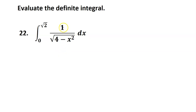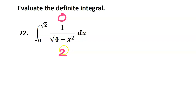It's all about the degree of the numerator compared to the degree of the denominator. In this case, the numerator has degree 0 — no variables — while the denominator has degree 2; that's the highest exponent. If the denominator degree beats the numerator by 2 or more, that's your clue that you will probably need an inverse trig function.